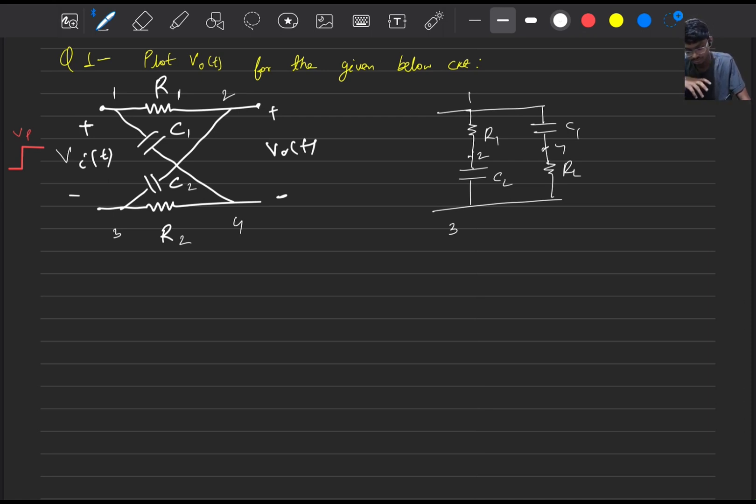Now here if we observe, we are giving the input. You may recall from previous days that this is like a bridge circuit and this is where we take the output from two and four terminals. One and three we give the inputs.